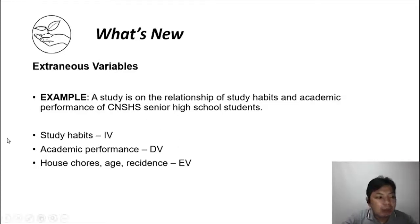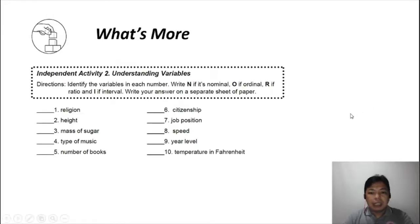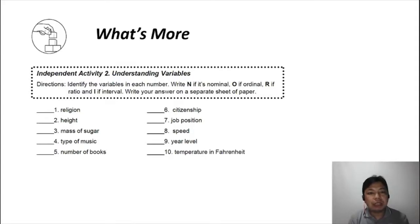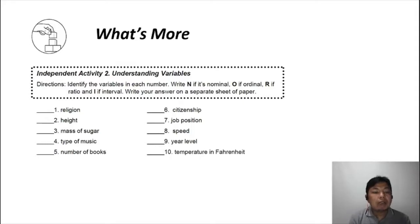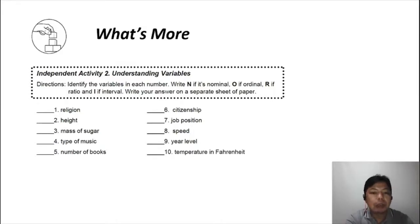That ends our discussion about variables. Now let's proceed with your post-activities. The first activity is 'understanding variables' — identify the variables in each number and write N if it's nominal, O if ordinal, R if ratio, and I if interval. Write your answer on a separate sheet of paper. You can pause this video while doing the activity, then continue when you're done.